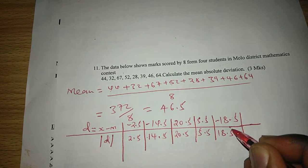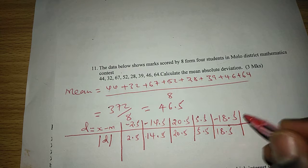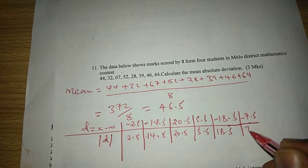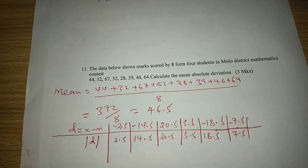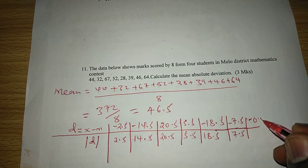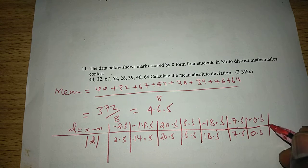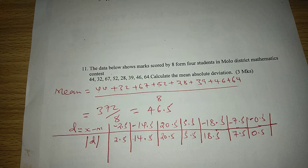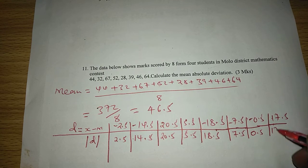This is 18.5. The other value is when we take 39 minus the mean of that, 46.5. We get negative 7.5, so 7.5 is the absolute value. The other value is when we take 46 minus 46.5, giving us negative 0.5, so 0.5 is the absolute value. After 46, we go to 64 minus 46.5. This gives us 17.5, so the absolute value is 17.5.